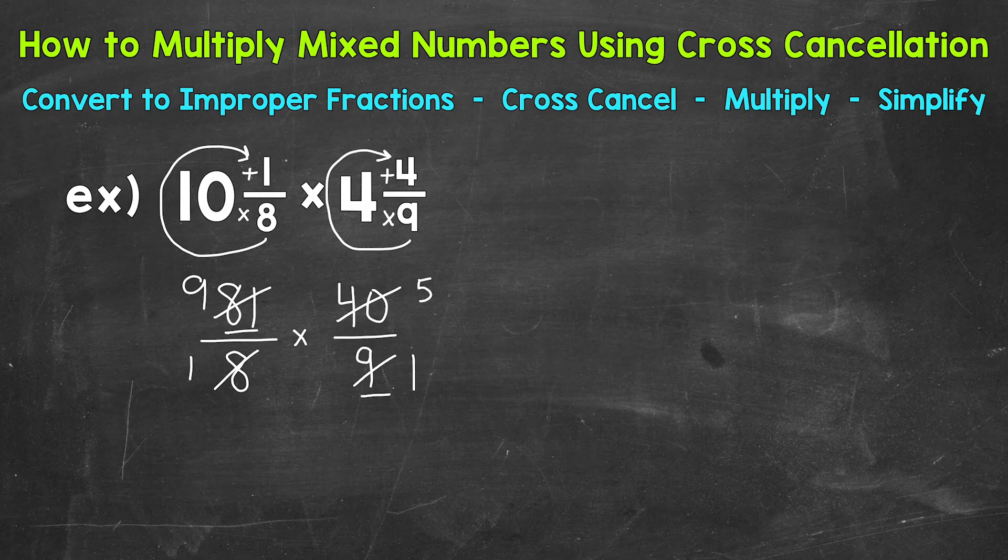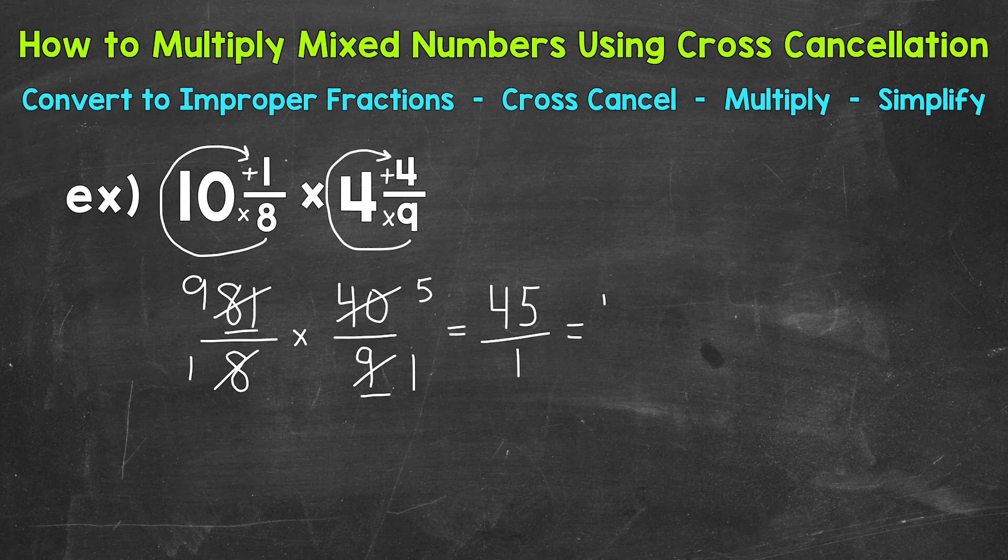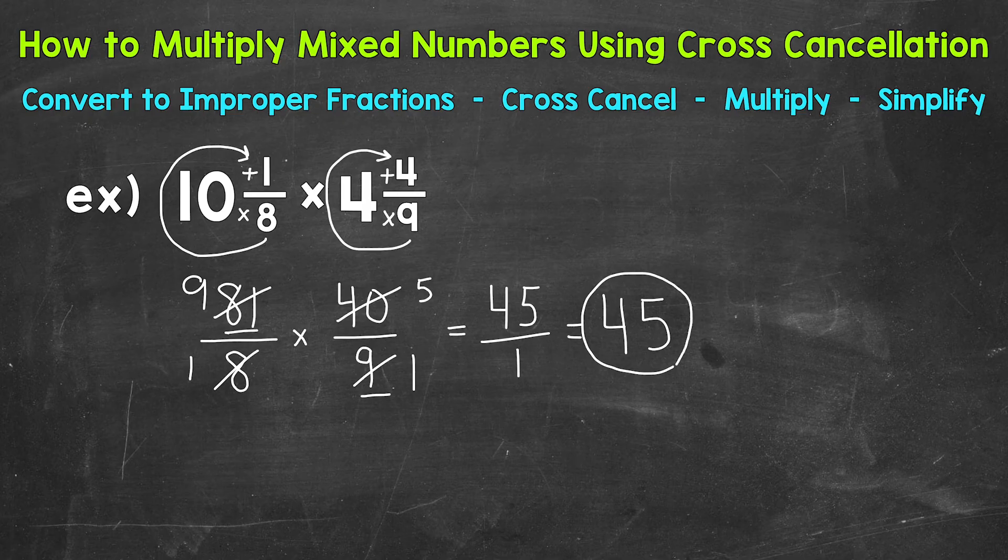Once we get to this point, we can multiply straight across. 9 times 5 is 45. And then 1 times 1 is 1. Now 45 over 1, that equals 45. So let's write our answer as a whole number instead of leaving it as an improper fraction. So our final answer, 45.